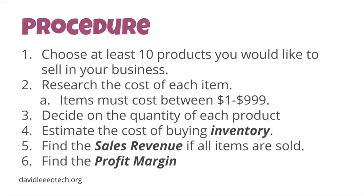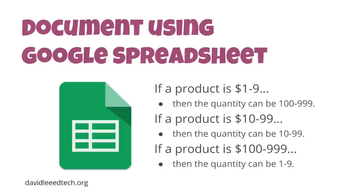Next, they decided on the quantity of each product. They were provided the following guidelines so that the multiplication skills used would match the Common Core Standards. For example, if the product costs $1 to $9, then the quantity can be $100 up to $999.